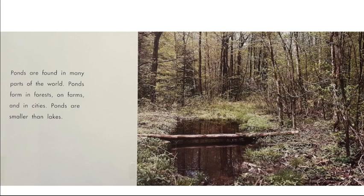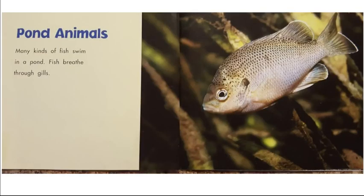Have you ever visited a pond before? Pond animals — many kinds of fish swim in a pond. Fish breathe through gills. This is a picture of a fish right here, and this fish has gills that let it breathe underwater. The gills are found on the side of the fish's body, right behind their head. Humans cannot breathe underwater — we have lungs, not gills. The pond is providing shelter for the animals, like this fish here.